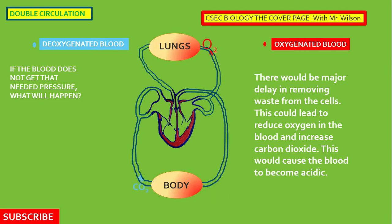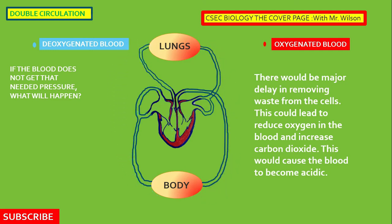If the blood becomes acidic, you are going to have lesions or sores on the skin, you will be easily tired because oxygen is not getting readily to the cells, and the process of respiration would be slowed down. It's like having garbage outside and the garbage truck is delayed by a week, two weeks, or a month — now you have rats, flies, dogs, and a pungent odor. When there is a delay in removing any form of waste, there are always going to be major new problems.